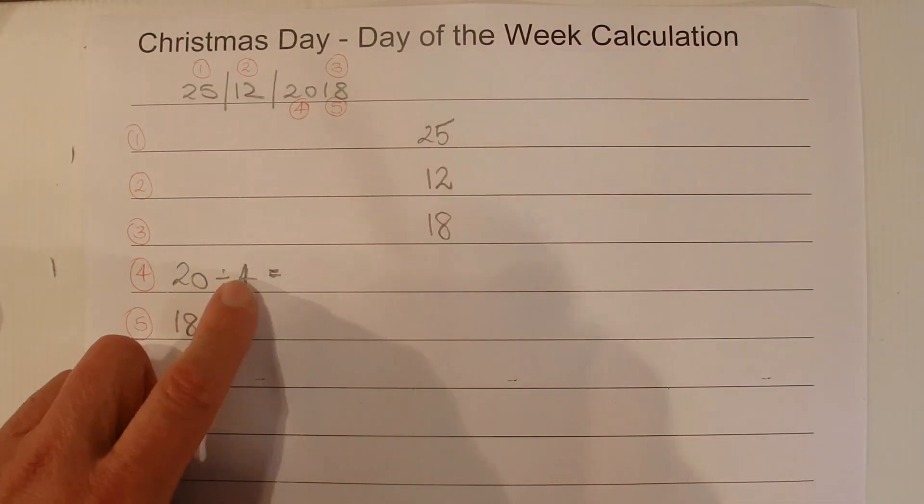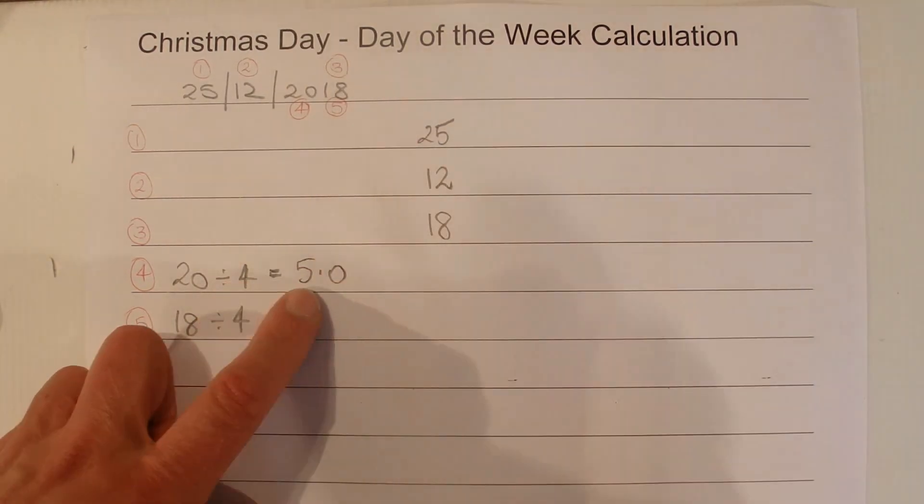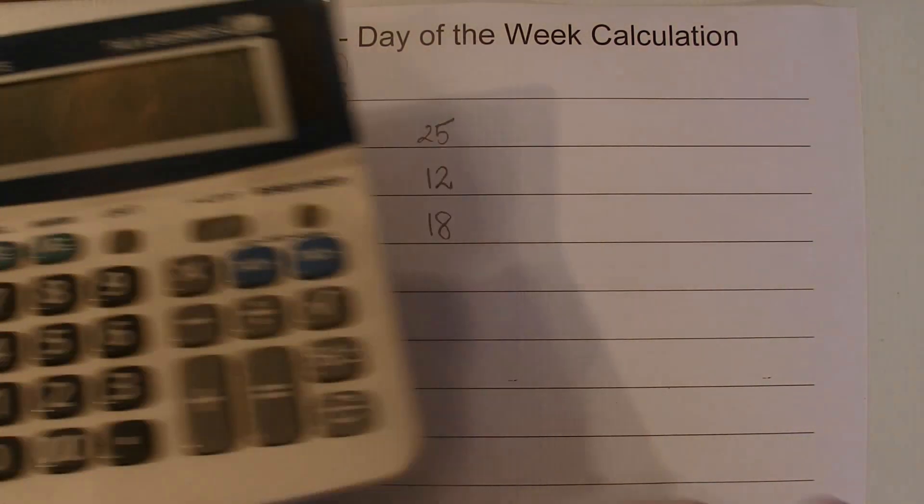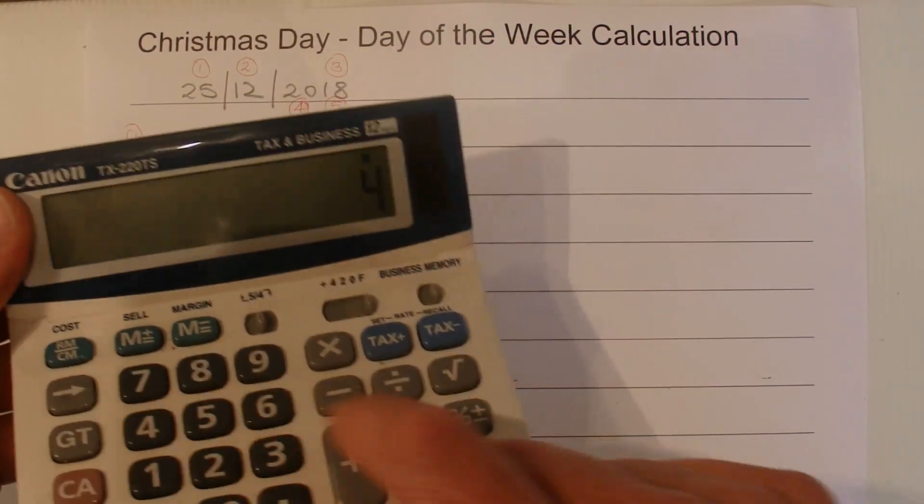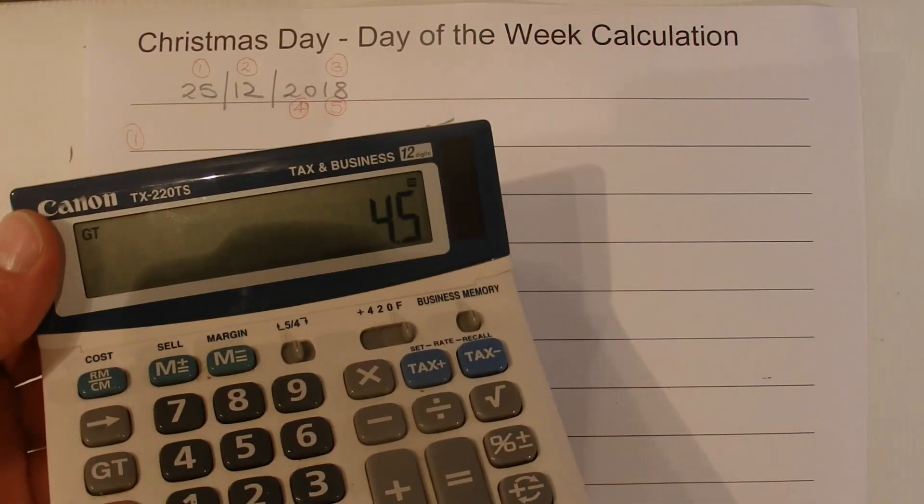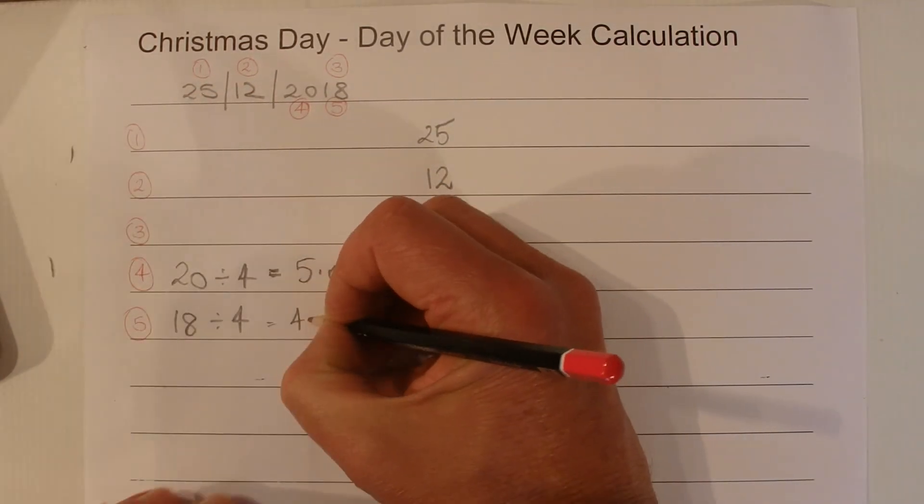And 20 divided by 4, 5 is 20, so that's 5.0 is the answer. And I'll do the 18 on the calculator. 18 divided by 4 is 4.5. So write that there, 4.5.